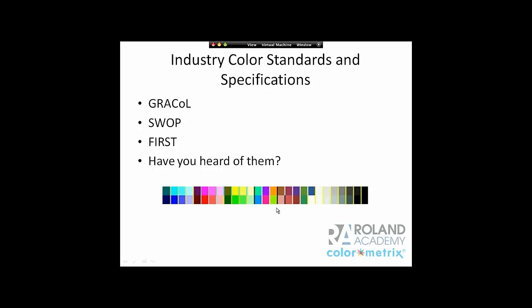One of the things we do is produce a target with 54 color patches on our prints. We produce this through our RIP and then we'll measure it with an instrument like an i1. Once we've measured it, that's where we can get into process control and verification of color. That would be for our four-color overall color and appearance. And then we're going to talk about spot colors also — that's a different approach.